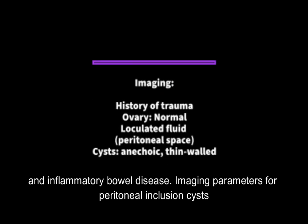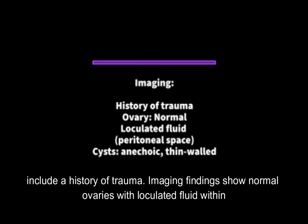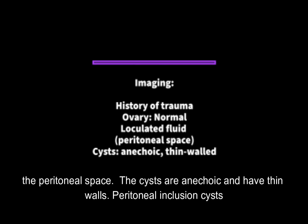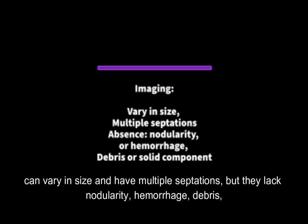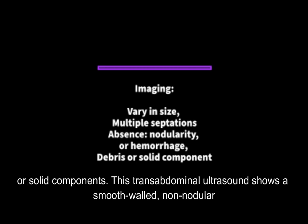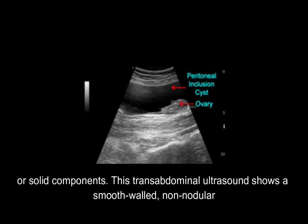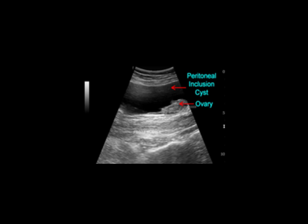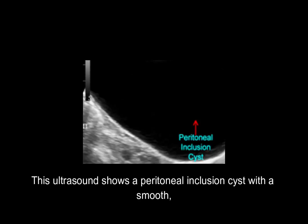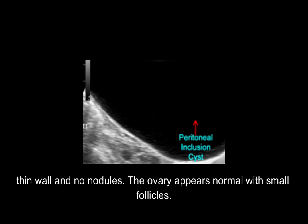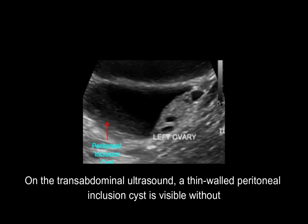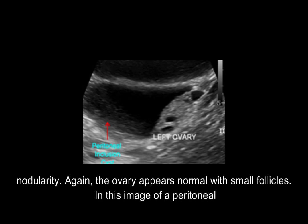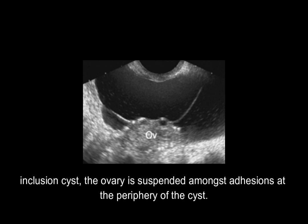Imaging parameters for peritoneal inclusion cysts include a history of trauma. Imaging findings show normal ovaries with loculated fluid within the peritoneal space. The cysts are anechoic and have thin walls. They can vary in size and have multiple septations, but lack nodularity, hemorrhage, debris, or solid components. This transabdominal ultrasound shows a smooth-walled, non-nodular peritoneal inclusion cyst with the ovary appearing normal with small follicles near the psoas muscle. Additional images confirm thin walls, no nodules, and normal ovaries. In one image, the ovary is suspended amongst adhesions at the periphery of the cyst.